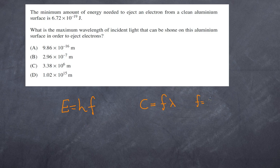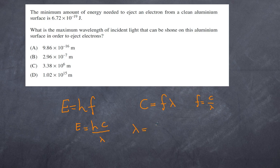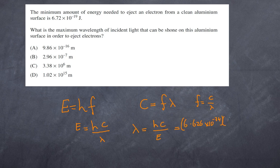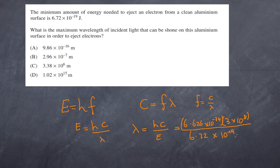Substituting frequency into E = hf gives E = h × c / λ, and therefore λ = hc / E. Substituting in the values: h = 6.626 × 10⁻³⁴, c = 3 × 10⁸, and E = 6.72 × 10⁻¹⁹. You can see that all the answer choices are wildly different, so we don't need an exact calculation.